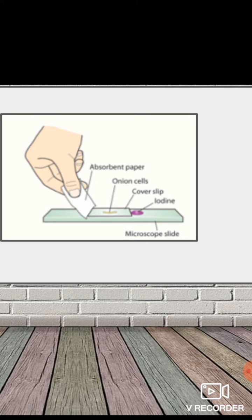It's better to use absorbing paper. Why? Because the absorbing paper can absorb the excess drops of iodine on the microscope slide.